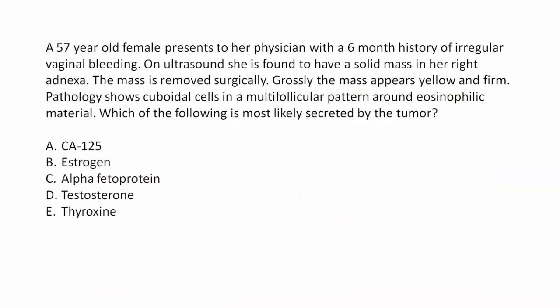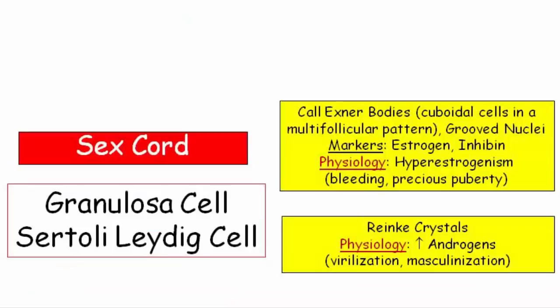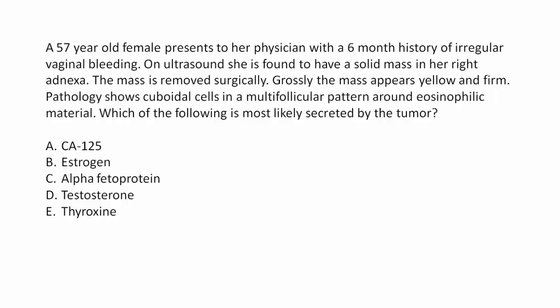Let's do another practice question. A postmenopausal female presents with postmenopausal bleeding. On ultrasound, she is found to have a solid mass in her right adnexa. The gross appearance of the mass is yellow and firm. Pathology shows cuboidal cells in a multifollicular pattern around eosinophilic material. What is secreted by the tumor? We have postmenopausal bleeding, a gross yellow and firm appearance, and pathology describing Call-Exner bodies — which seals the deal for a granulosa cell tumor. The tumor marker is estrogen.